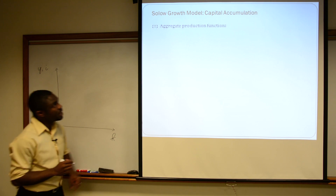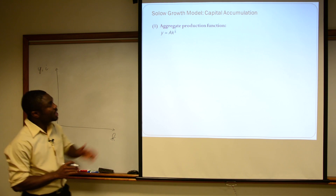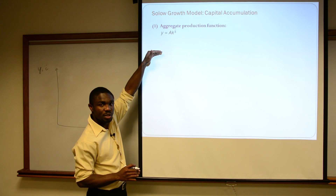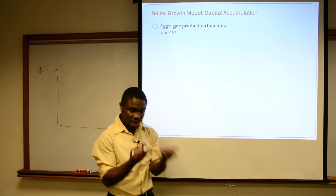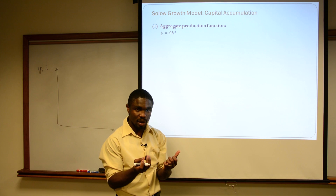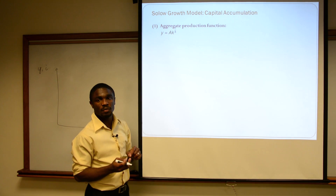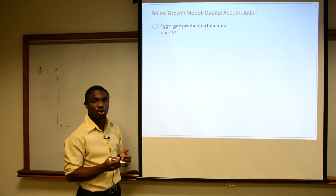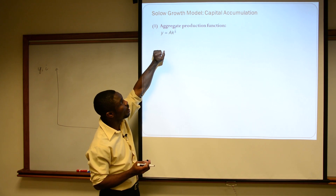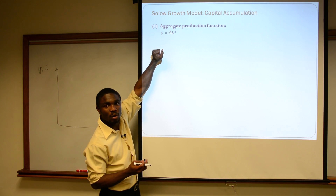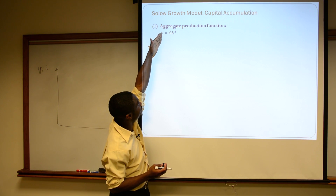The first thing we need for our model is our aggregate production function — tell me your inputs, how many units of inputs you have, and I'll be able to tell you the maximum amount of output you should be producing. Here, we're assuming the standard Cobb-Douglas form. So we have our output per person is equal to...